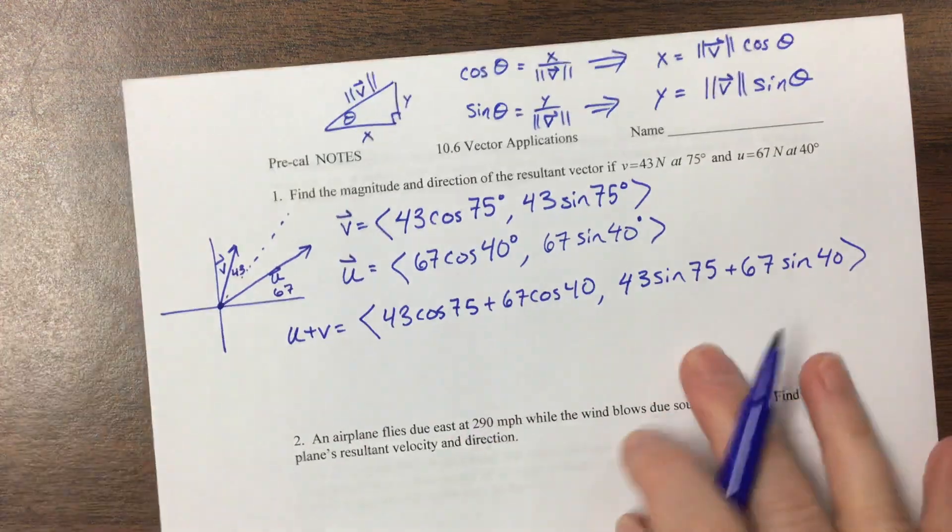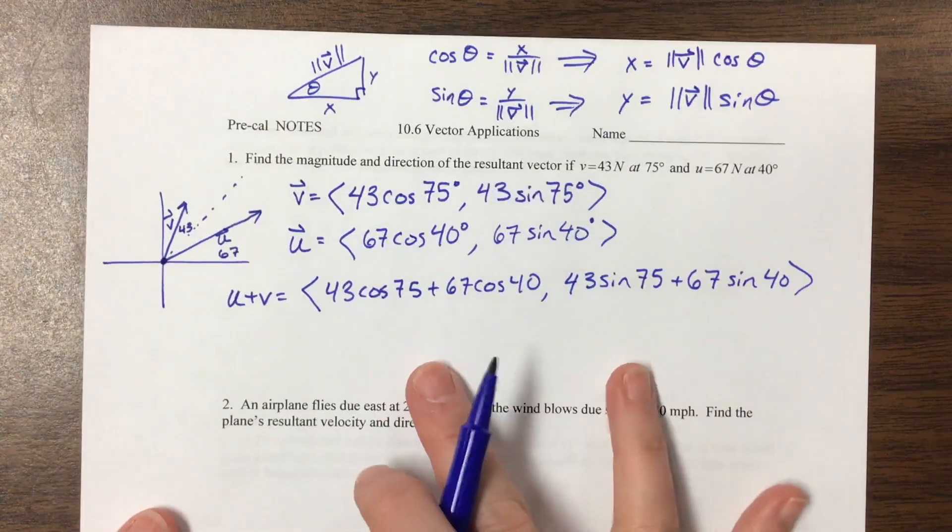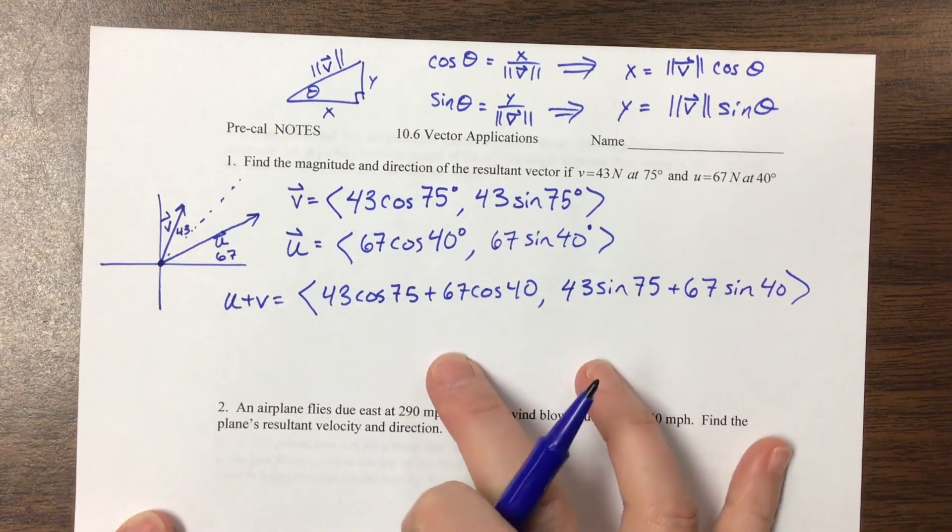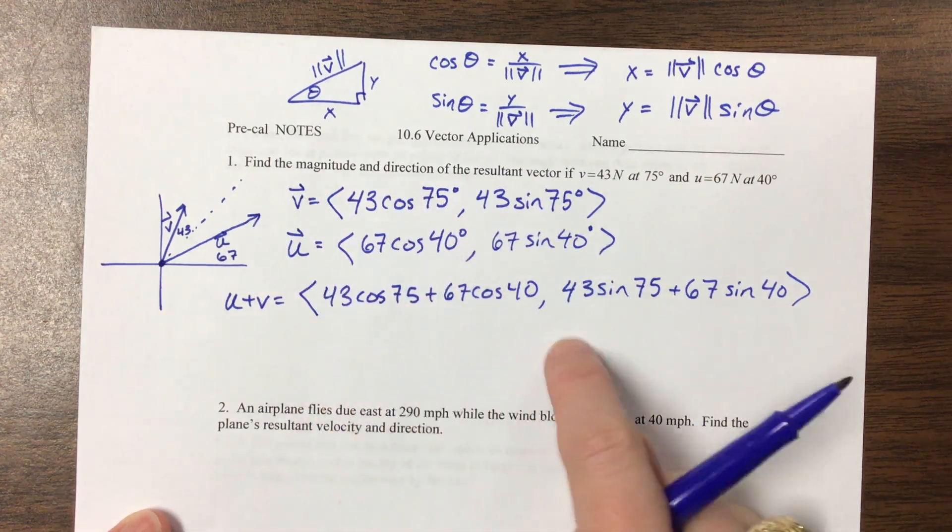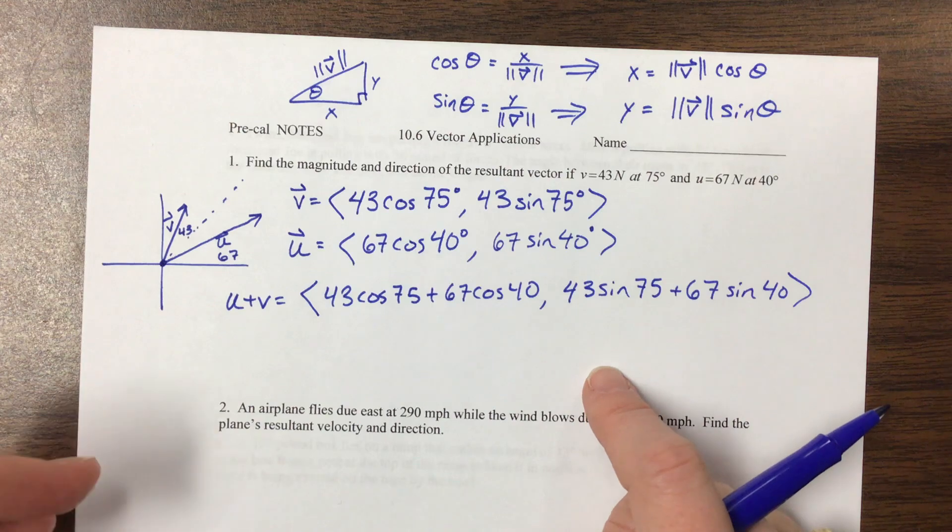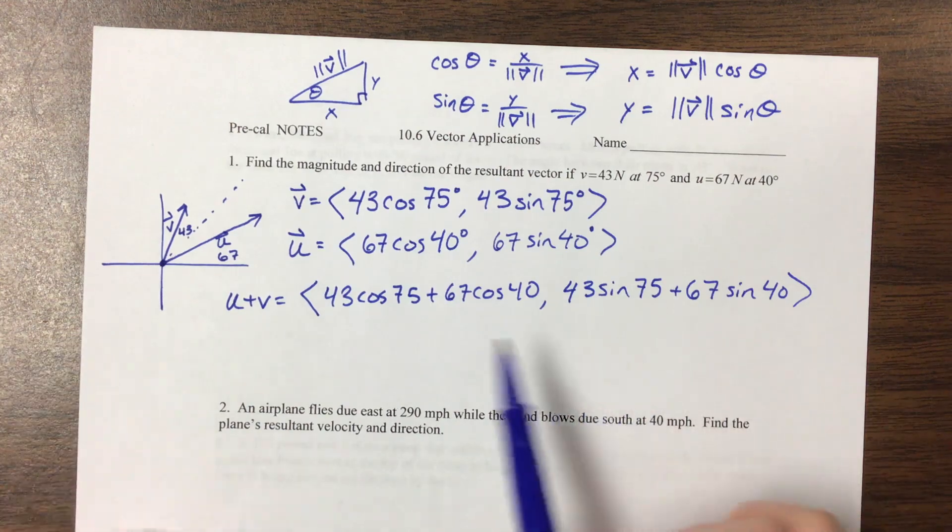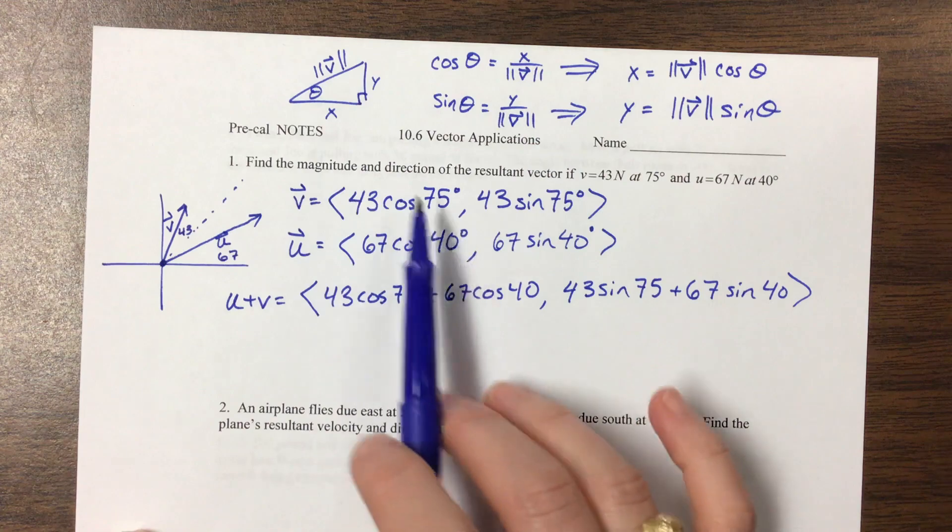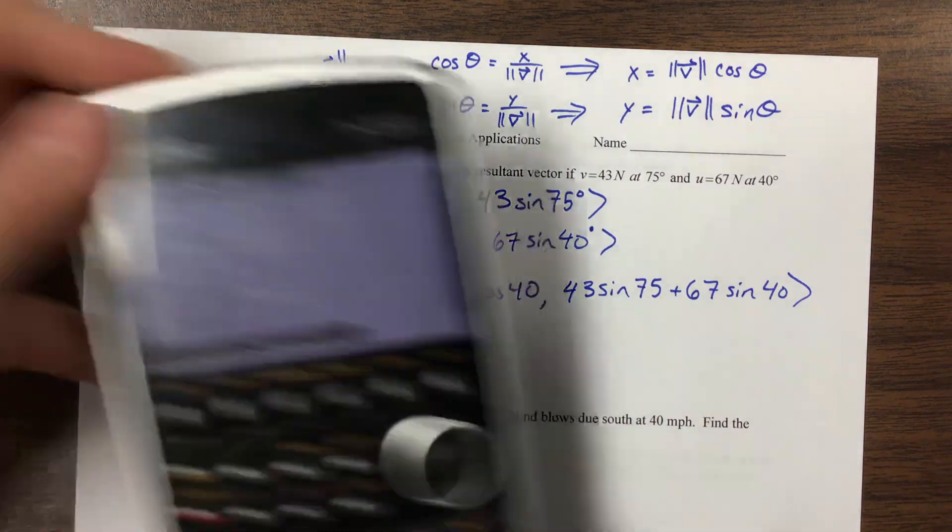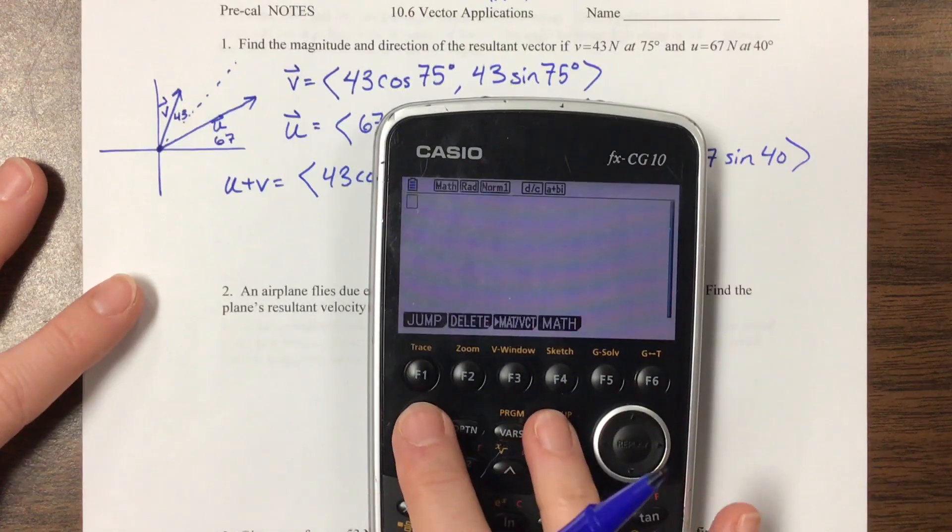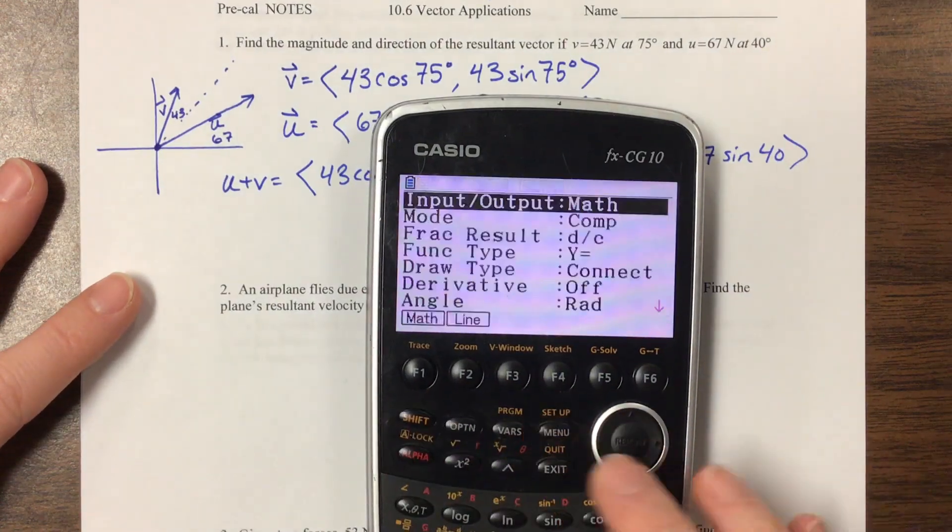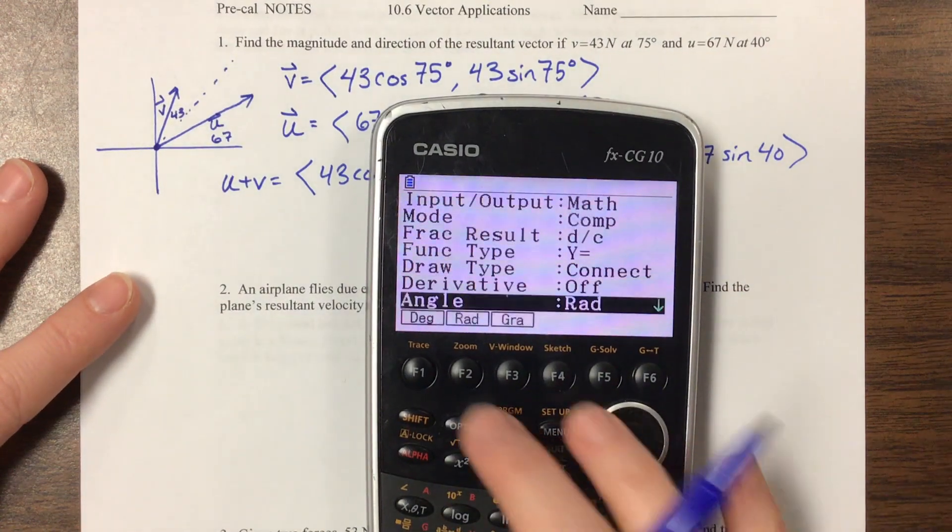Okay, this is the exact form of the component form, but notice they ask you to find the magnitude and direction. So this doesn't mean a whole lot to us just in general, because there's all these cosines and sines. But second, we're not in the correct form of an answer. So I'm going to grab my calculator, and I need to change it to degrees. So shift, set up, I come down here to degrees.